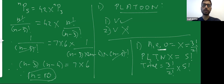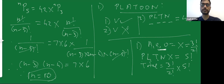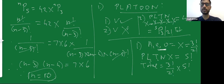For case 2, vowels are never together: forget about the vowels first. The remaining letters P, L, T, N — that is 4 letters — can be arranged in 4! ways. Now write cross signs between and around those 4 letters, giving 5 possible positions. You have 3 vowels (A, O, O) to place in those 5 positions — that is 5P3 ways. Since O is repeated twice, divide by 2!. So the total for vowels never together = 4! × 5P3 / 2!.